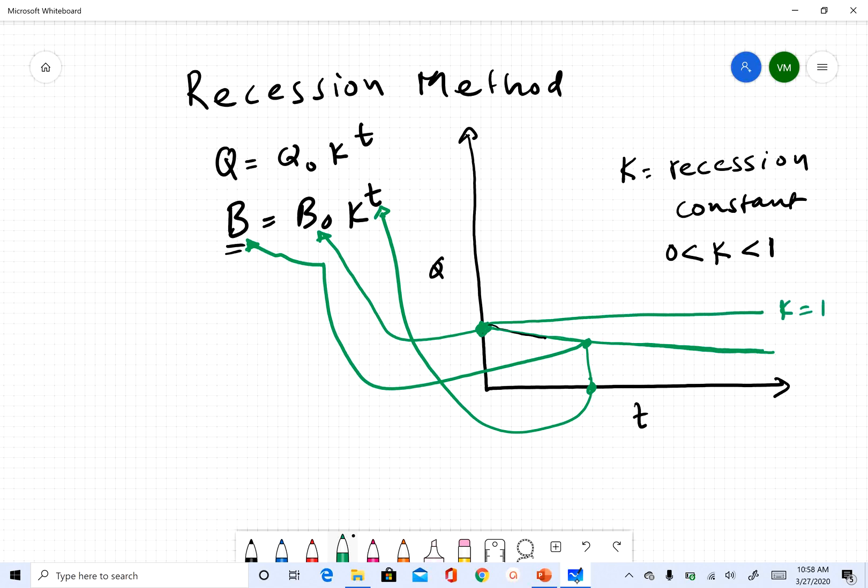As k gets nearer to zero, you will get a faster recession - so k close to zero. Anywhere in between, depending on what value you pick, it will be either horizontal if k equals to one.